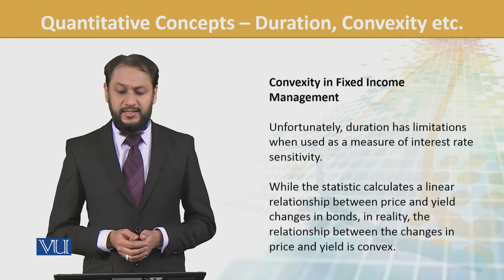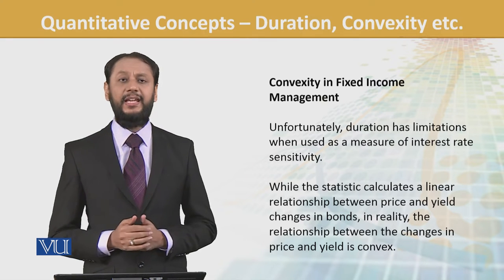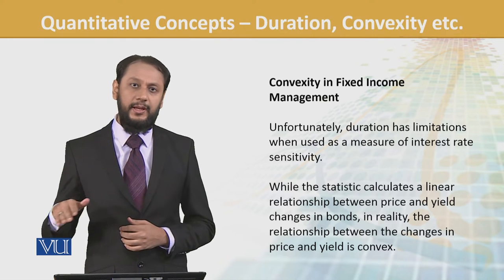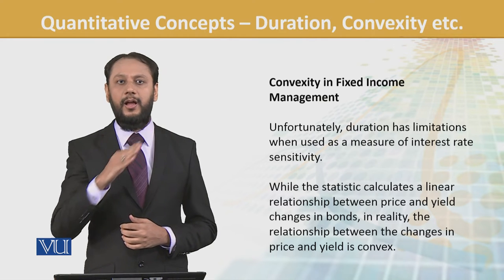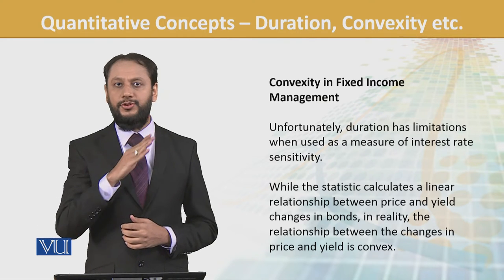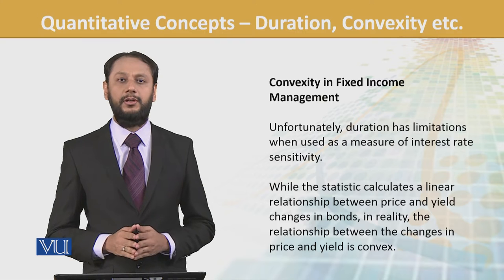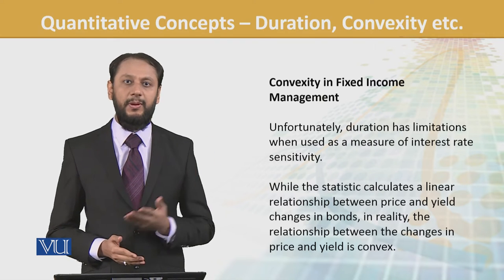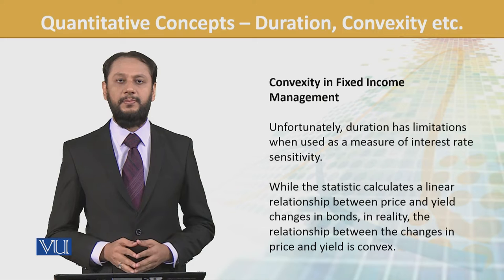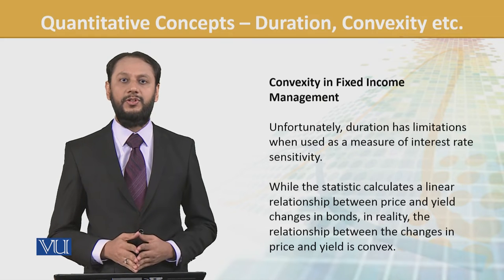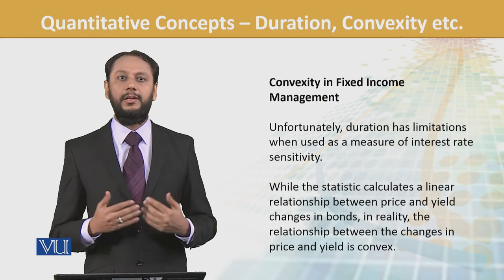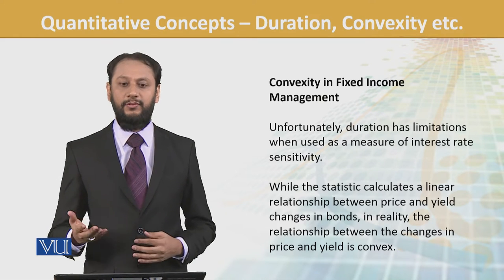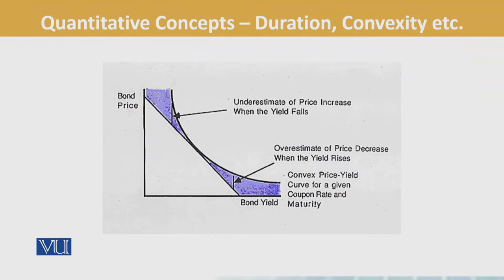What happens is that statistics calculates a linear relationship — straight up and down movement. Duration works on that assumption, but actually bond prices don't move in a straight line. When interest rates change, there is a curvy nature in the movement of bond prices — that's why we need convexity.